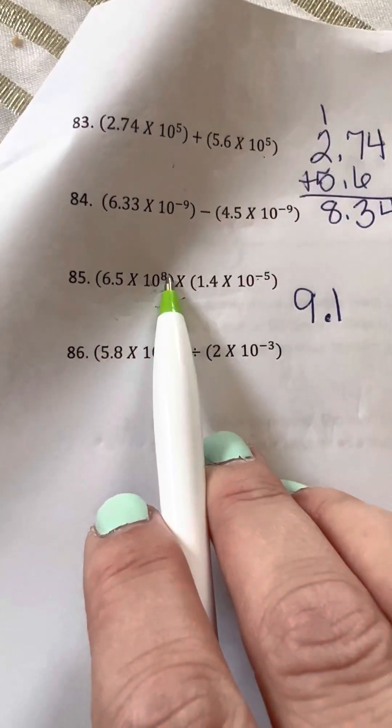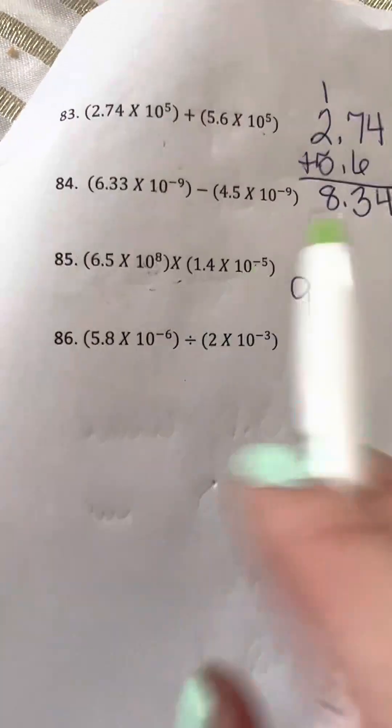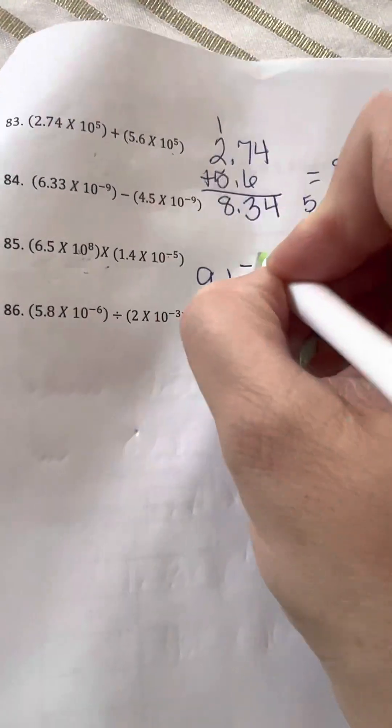9.1 times 10 to the 8 plus negative 5. Because this is also where we multiply the 10, same base 10, different exponents, 8 and a negative 5. This would be to the negative, oh sorry, I've got to write my times 10, times 10 to the negative 3.